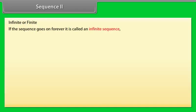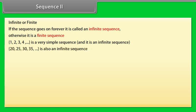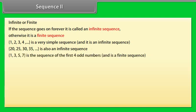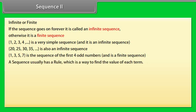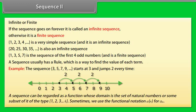If the sequence goes on forever, it is called an infinite sequence. Otherwise, it is a finite sequence. 1, 2, 3, 4, and so on is a very simple sequence and it is an infinite sequence. 20, 25, 30, 35, and so on is also an infinite sequence. 1, 3, 5, 7 is the sequence of the first four odd numbers and is a finite sequence. A sequence usually has a rule, which is a way to find the value of each term. For example, the sequence 3, 5, 7, 9, and so on starts at 3 and jumps by 2 every time.